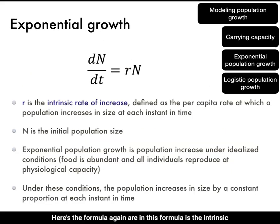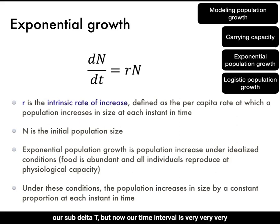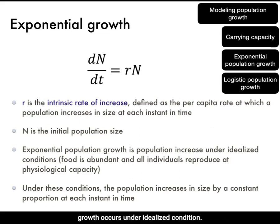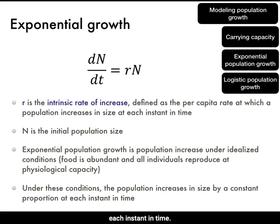Here's the formula again: dN/dt = rN. In this formula, r is the intrinsic rate of increase — defined as the per-capita rate at which the population increases its size at each instant in time. N is the initial or current population size. Exponential growth occurs under idealized conditions — when food is abundant and all individuals reproduce at their physiological capacity. Under such conditions, the population increases in size by a constant proportion at each instant in time.